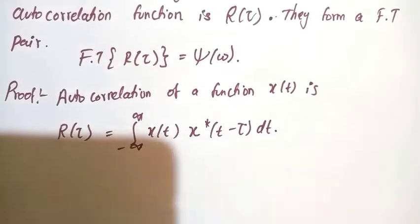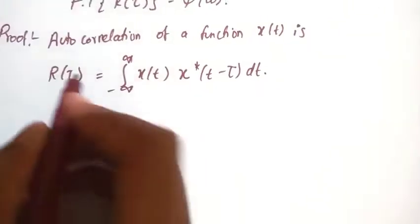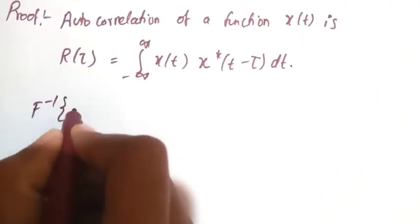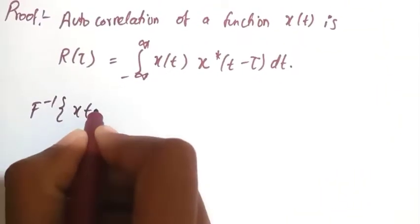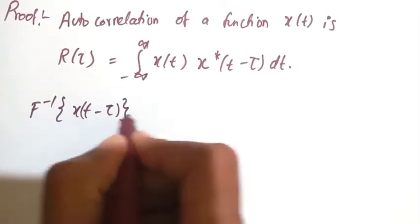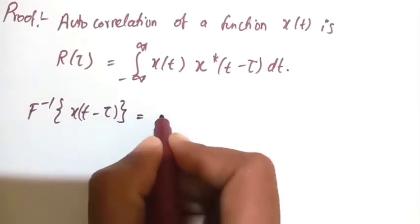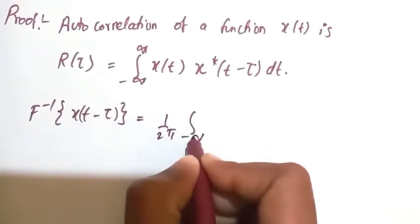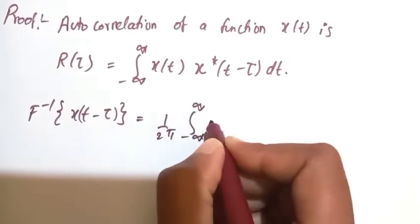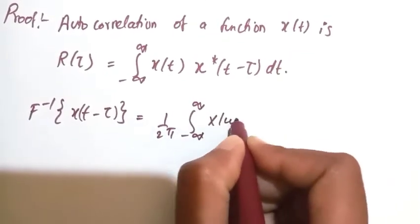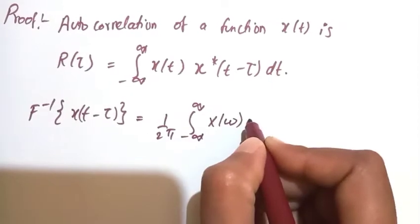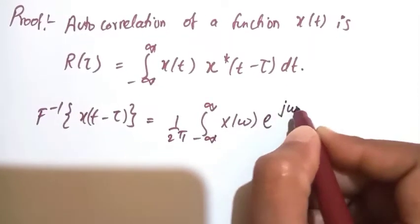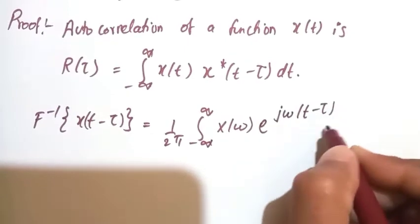Now we will use the inverse Fourier transform of x(t minus tau), which equals 1 over 2pi times the integration from minus infinity to infinity of X(omega) times e to the power of j*omega*(t minus tau) d-omega.